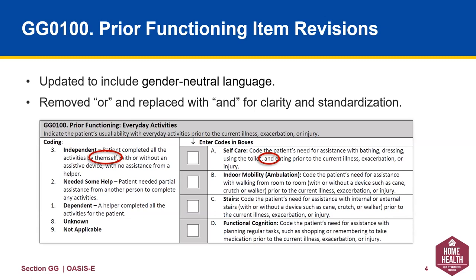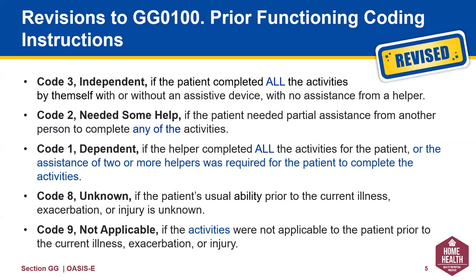Note that the wording here has been updated to be gender neutral. On the right-hand side, the wording changes were made for clarity, removing 'or' and replacing it with 'and.' As we proceed through our review of this section of the OASIS, please pay close attention to the words that are in blue typeface. These are the changes we will look at in depth in each item.